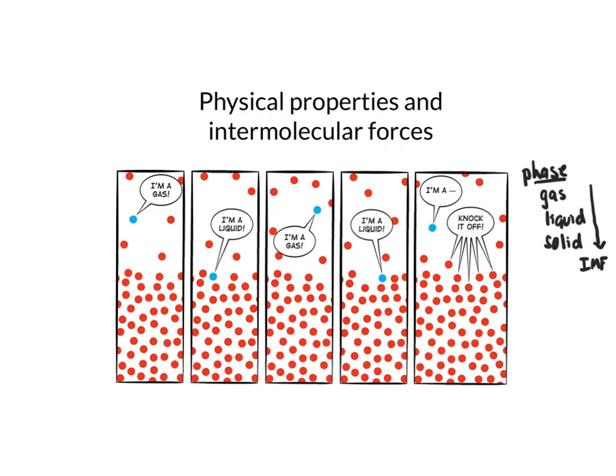Each substance will have a particular phase of matter that it exists in at room temperature. But if we change the temperature, we can get a gas to become a liquid, or we can take a liquid and have it become a gas — so we can evaporate, going from the liquid to the gas, or condense, going from the gas to the liquid.